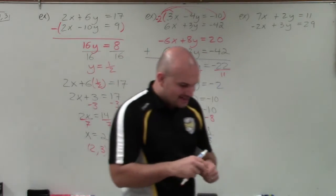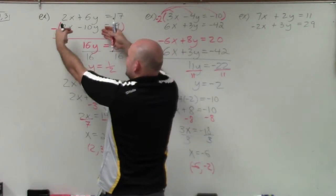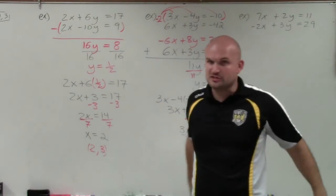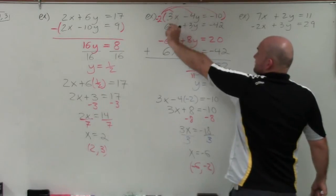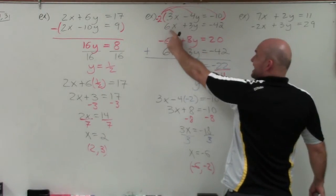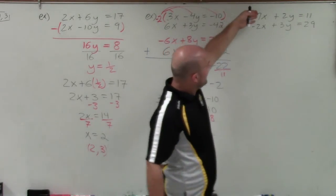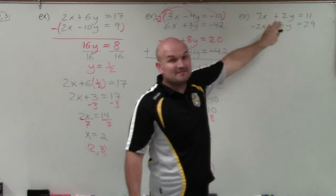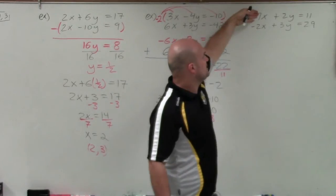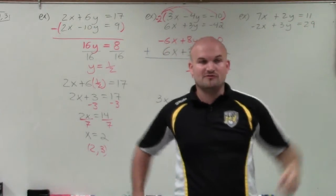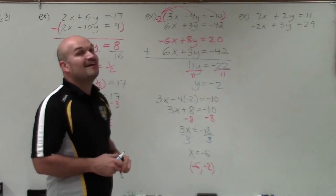For the last example, let me summarize the three cases. Whenever the coefficients are exactly the same with the same sign, you subtract the equations. If they are exactly the same but with opposite signs, you add them. If one coefficient is the LCM of the two coefficients, then just multiply one equation. However, in this next example, I have neither — the coefficients aren't the same, nor can I multiply just one equation to get the LCM. So in this case, I need to multiply both equations by multipliers.